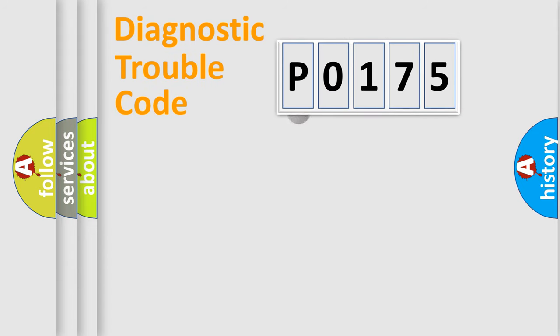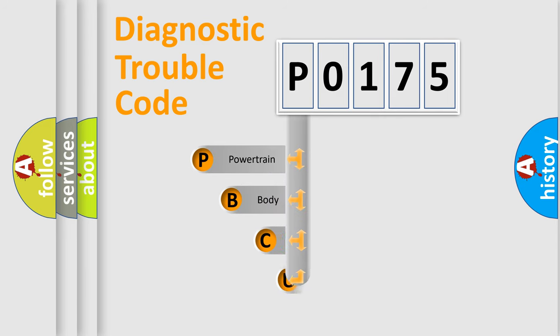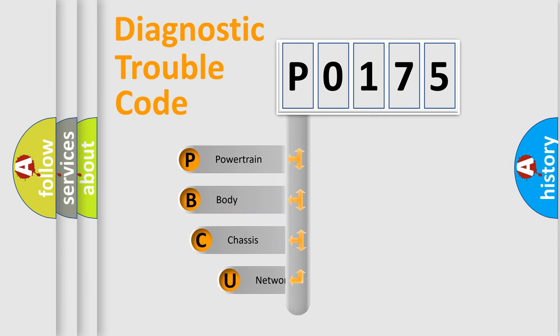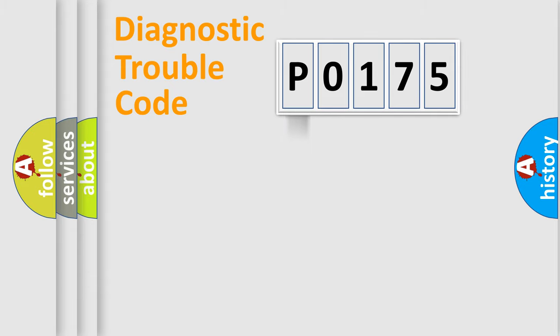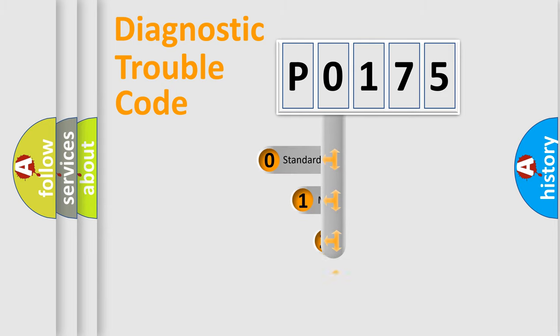Let's look at the history of diagnostic fault code composition according to the OBD2 protocol, which is unified for all automakers since 2000. We divide the electric system of an automobile into four basic units: Powertrain, Body, Chassis, and Network. This distribution is defined in the first character of the code.